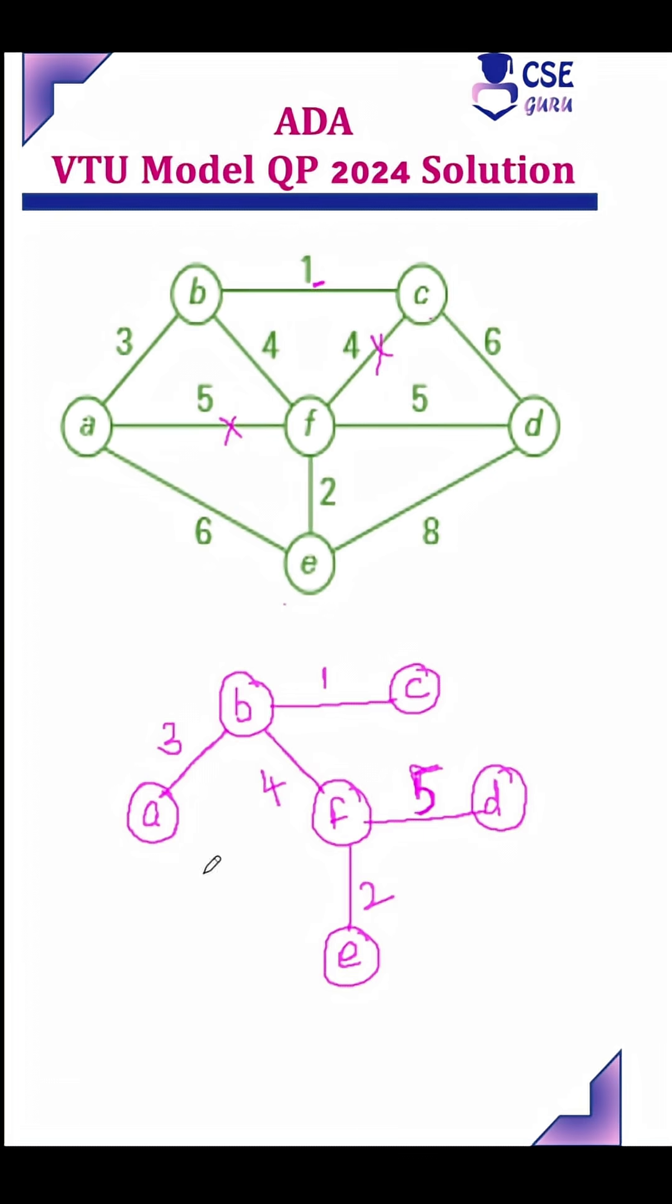Remaining edges, if we are including, it forms a cycle. So exclude those edges. Now we got a spanning tree that connects all the vertices and does not form any cycle. Cost of minimum spanning tree: 15. Adding all the least cost edges.